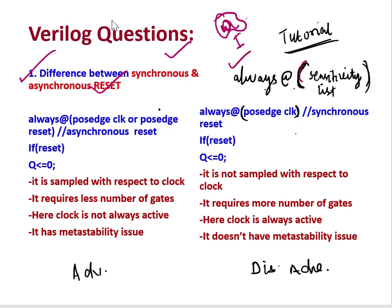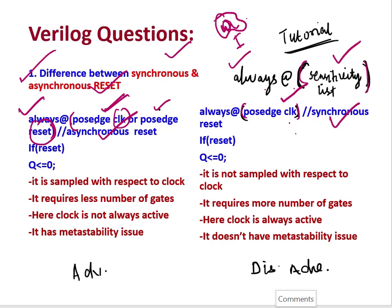The always block is written as: always @ followed by parentheses containing the sensitivity list. If we write 'always @(posedge clock or posedge reset)' — mentioning both clock and reset signals inside the sensitivity list — that format is called asynchronous reset. If we mention only the positive or negative edge of the clock signal, that format is called synchronous reset.